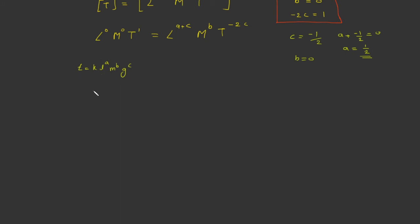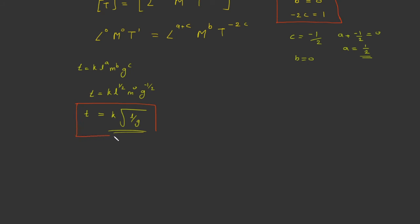We started with the assumption t equals k into l raised to a, m raised to b, and g raised to c. Substituting the values: a is 1/2, b is 0, g raised to c where c is minus 1/2. This simplifies to t equals k into the square root of l by g. By other methods or experiments, the value of k is found to be 2π. So the time period of a simple pendulum is t equals 2π times the square root of l by g.